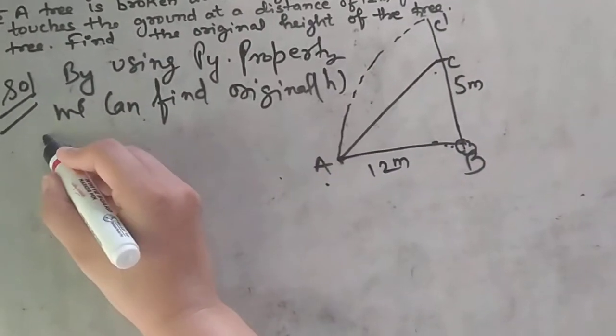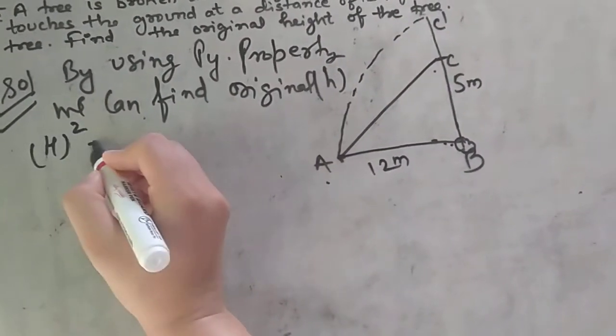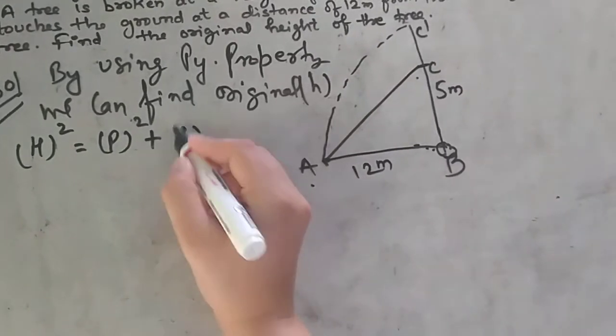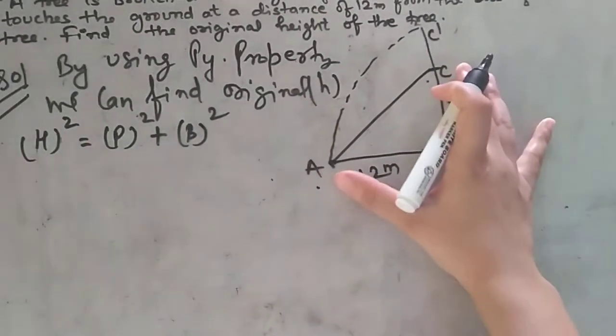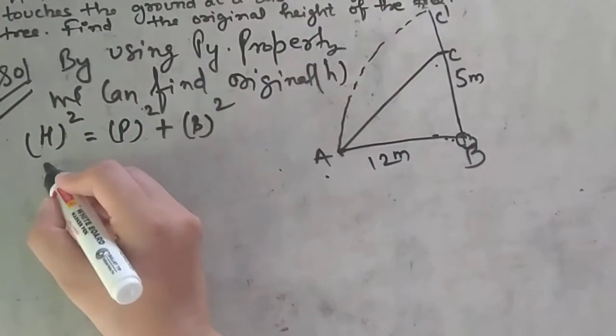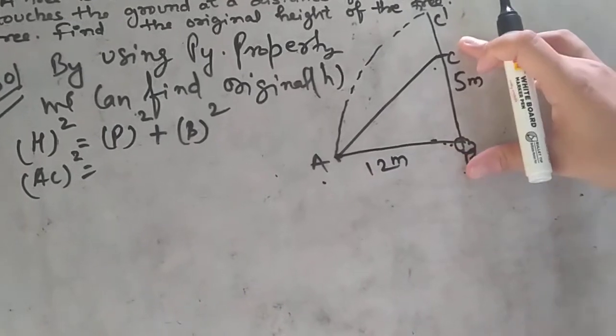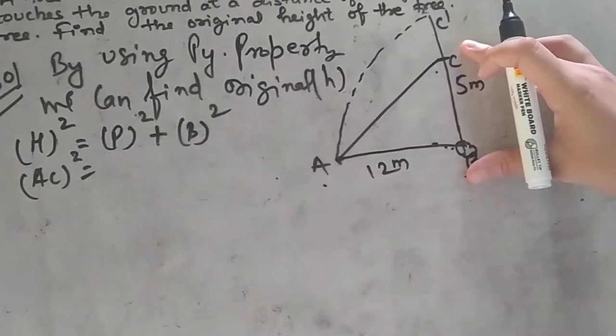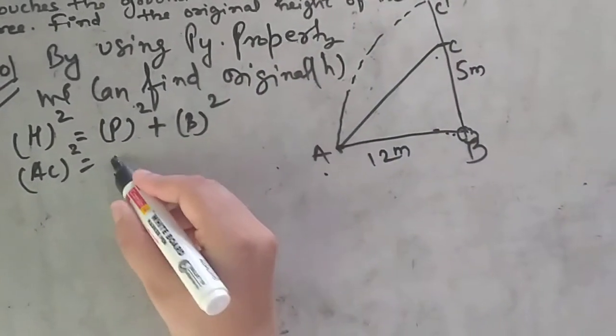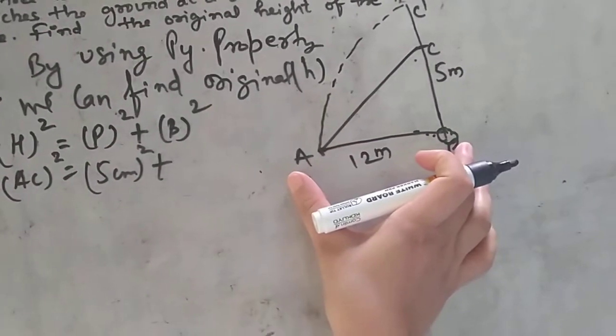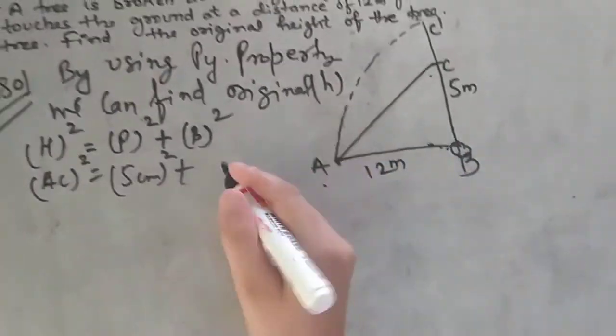We know the Pythagoras property: hypotenuse squared equals perpendicular squared plus base squared. The hypotenuse AC we need to find. The perpendicular BC is 5 meters, so BC squared is 25.